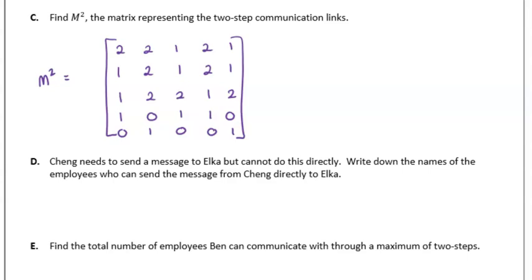We're going to write that down on our page now. There's our two-step matrix. Part D: Cheng needs to send a message to Alka but cannot do this directly. Write down the names of the employees who can send the message from Cheng to Alka directly. Here we are being asked to find all of the two-step pathways or communication pathways from Cheng to Alka, from C to E.